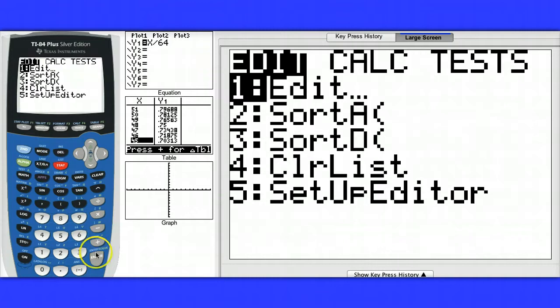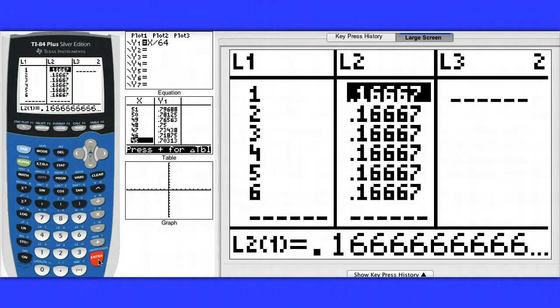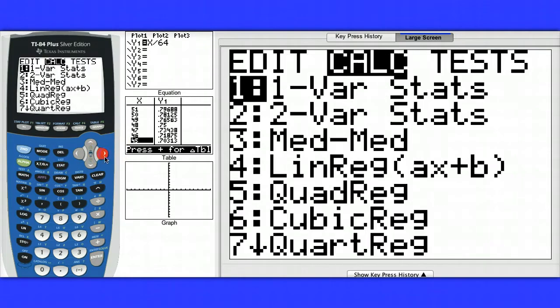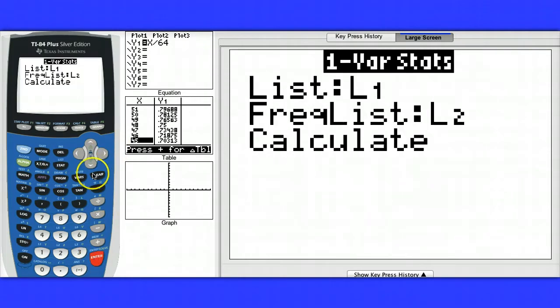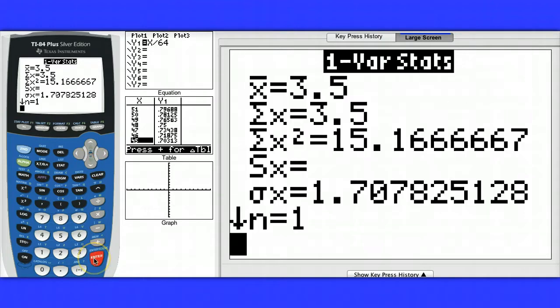Here we can see I have in list 1 the different values of the die, 1 through 6, and the probability of each. When I go to stat, calc, and do one variable statistics, the values are in list 1, the frequency is in list 2. I get a mean of 3.5 and a standard deviation of 1.7.